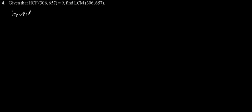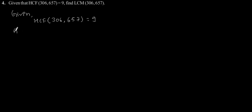Exercise 1.2, question number 4: Given that HCF of 306 and 657 is equal to 9, find the LCM of 306 and 657. As given in the question, HCF of 306 and 657 is equal to 9.